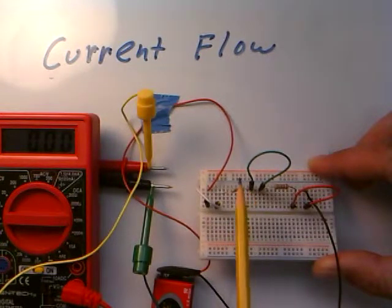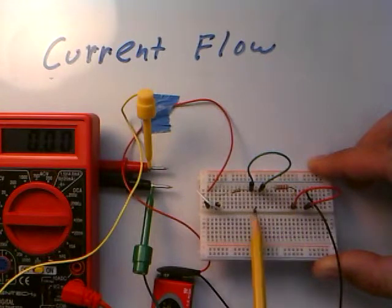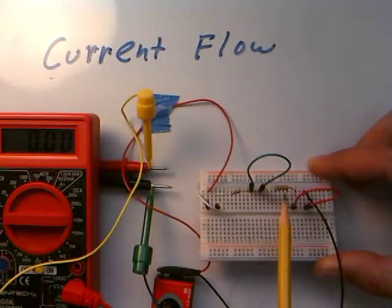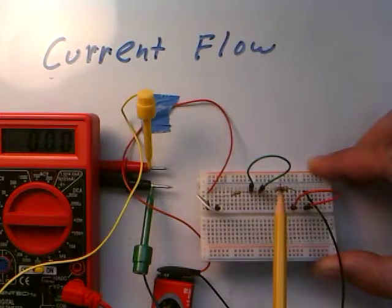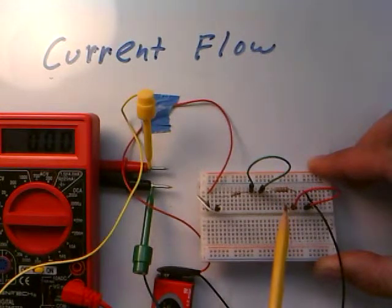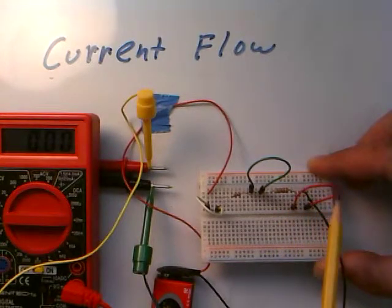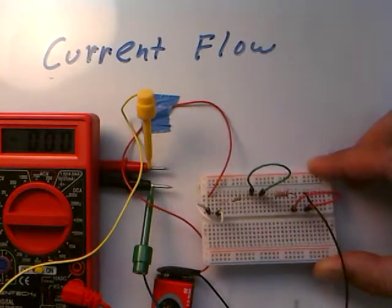Then the output of that resistor is sent through another jumper wire here, a couple of columns over to the input of another resistor, which is a red, red, red, so a 2,200-ohm resistor. Then the output of that resistor is sent through another jumper wire onto the negative terminal of the battery and back around again.